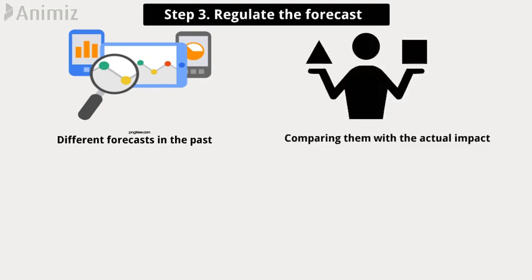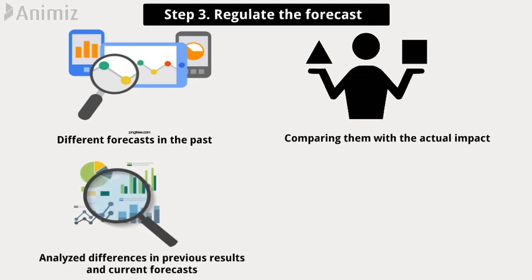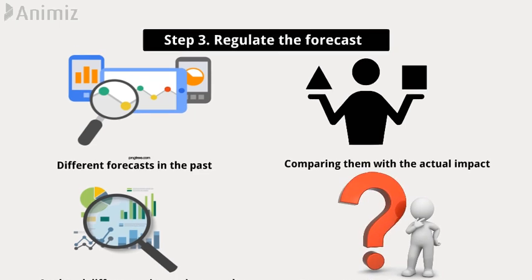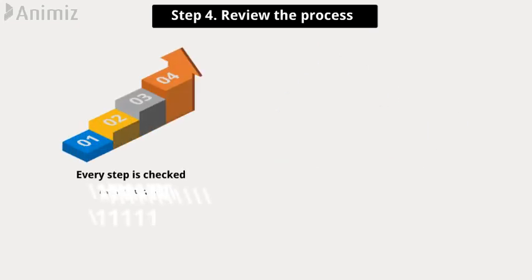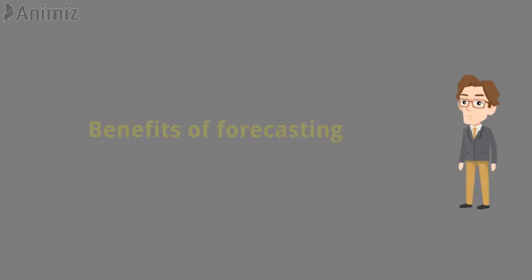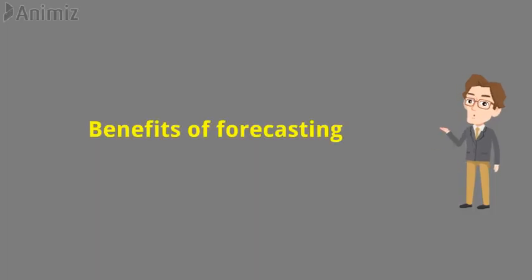Step three — regulate the forecast. This involves looking at different forecasts in the past and comparing them with the actual impact that happened with the business, then analyzing differences in previous results and current forecasts, and considering the reasons for the deviations. The last step is to review the process — every step is checked and refinements and modifications are made.